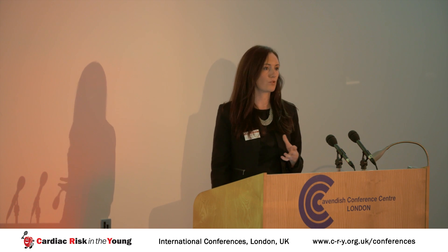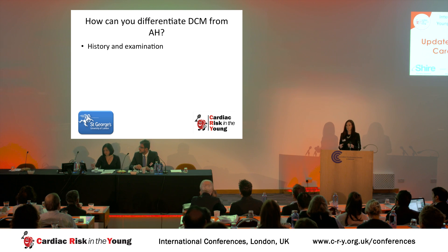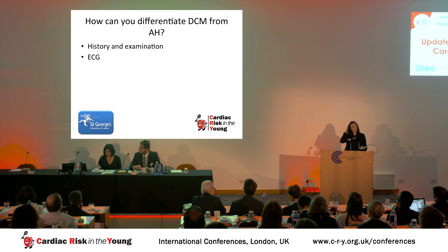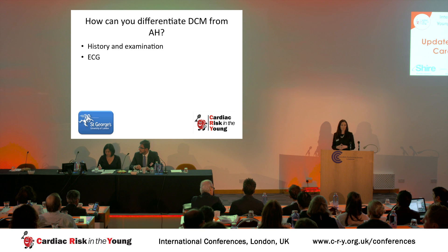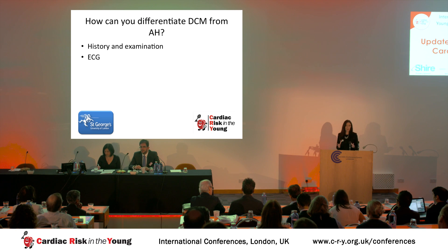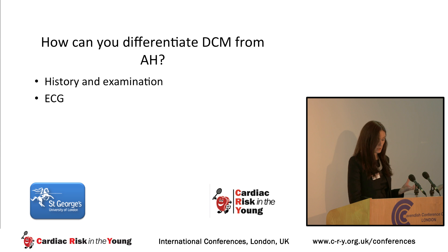So how can you differentiate athlete's heart from dilated cardiomyopathy? If an athlete presents with new ominous symptoms such as syncope or a reduction in the ability to train, you're going to think this is more likely a pathological process. What about the 12-lead ECG? We know ECG is an excellent tool for picking up other cardiomyopathic processes, for example hypertrophic cardiomyopathy. But some of the work we presented at the American Heart Association last year suggests that many people with very mild dilated cardiomyopathy have an essentially normal ECG — so this may not be as useful a tool as we initially thought.